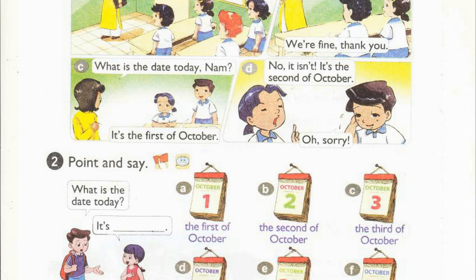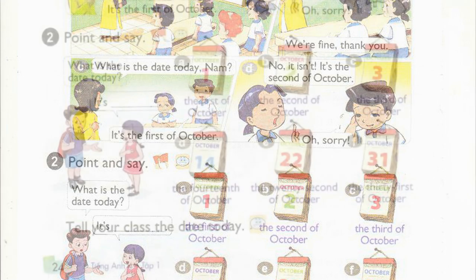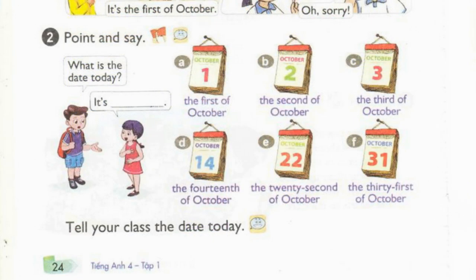Page 24, Activity 2. Point and say. What is the date today? It's the 1st of October. A. The 1st of October. B. The 2nd of October. C. The 3rd of October. D. The 14th of October. E. The 22nd of October. F. The 31st of October.